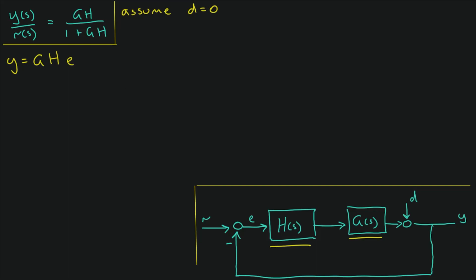So what is E? Whenever we see these circles, we assume that there's an implicit summation going on here, unless it's otherwise stated. So this one here would be a negation. So E is R minus Y, because this is just a direct connection here. So we have E is equal to R minus Y.